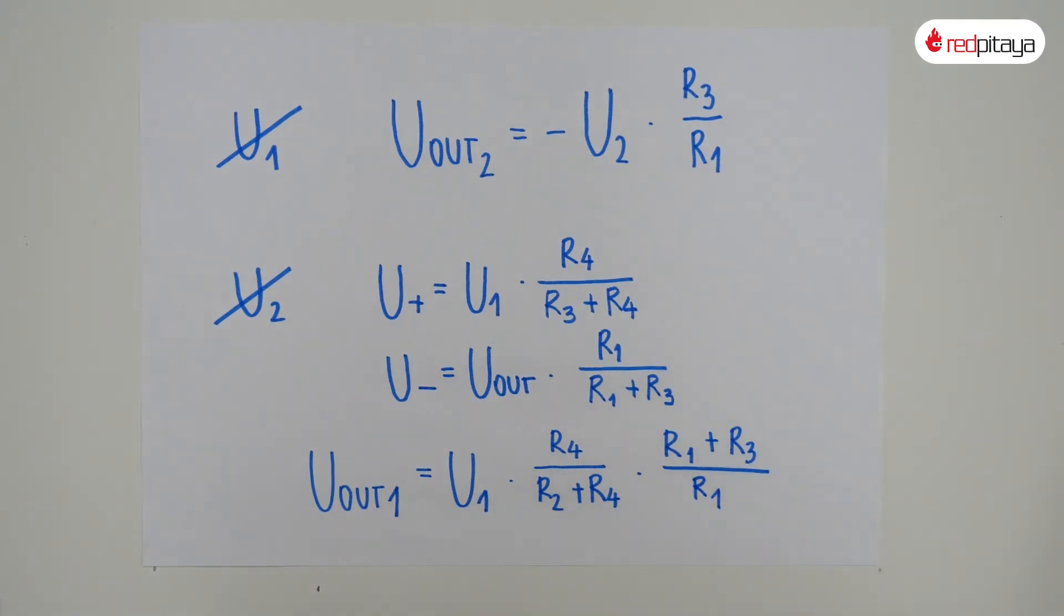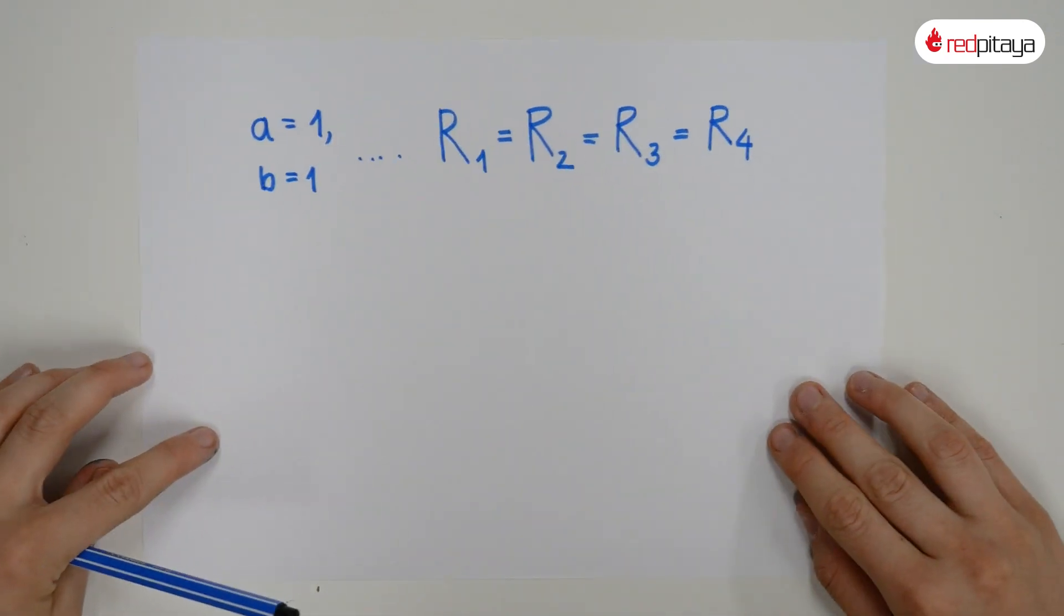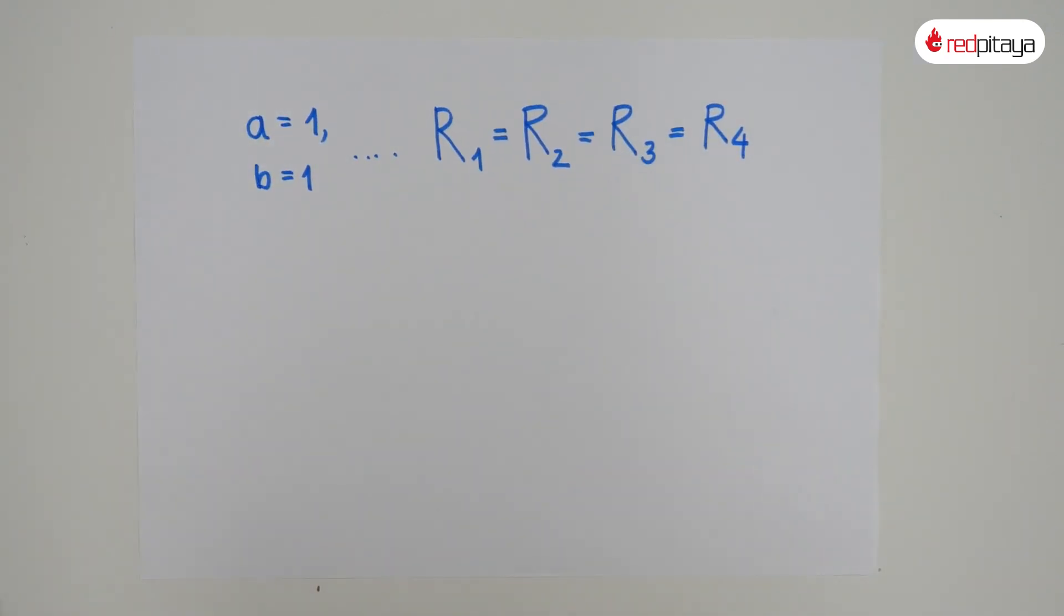It should be apparent that if we want an equation with A and B coefficients set to 1, all resistors have to be equal. In this case, we get the final equation.